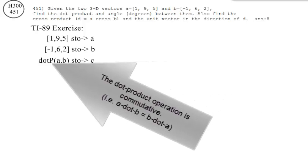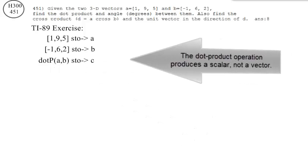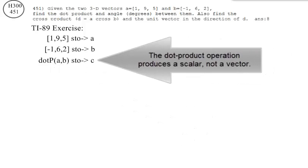The dot product operation is commutative, meaning A dot B is the same as B dot A. The dot product operation produces a scalar, not a vector.